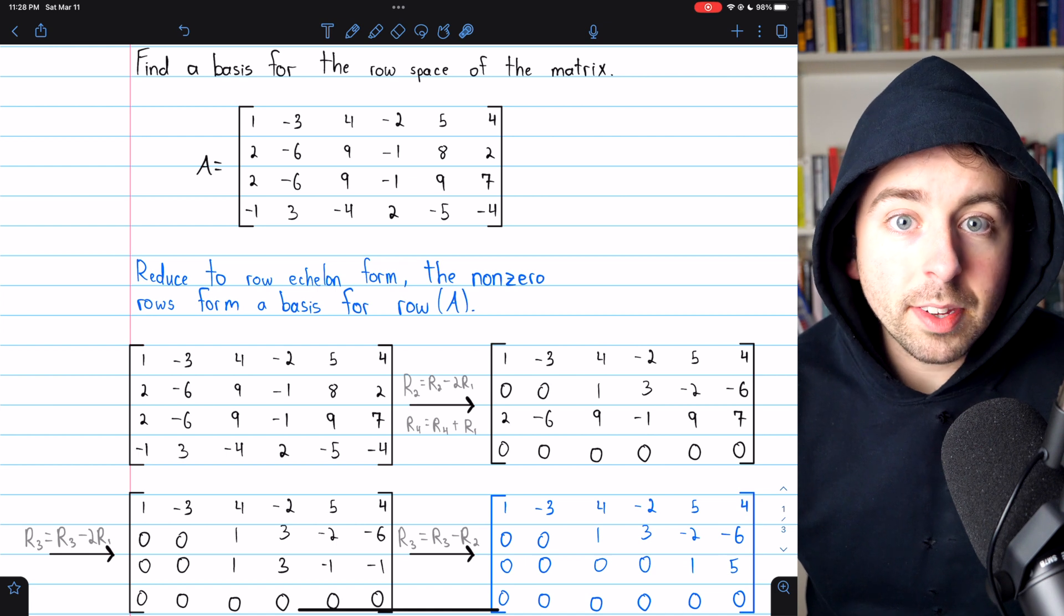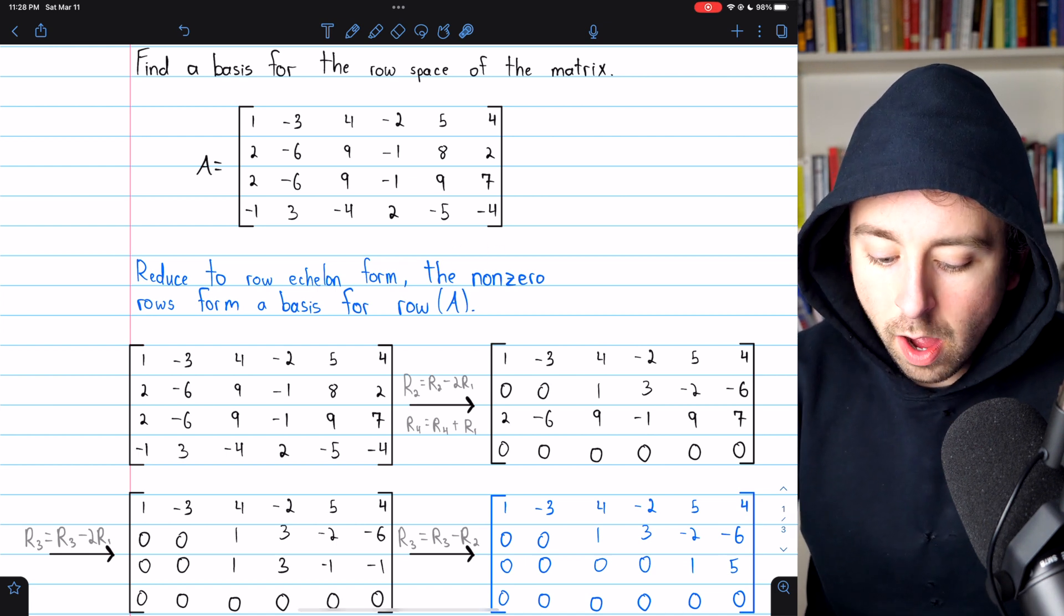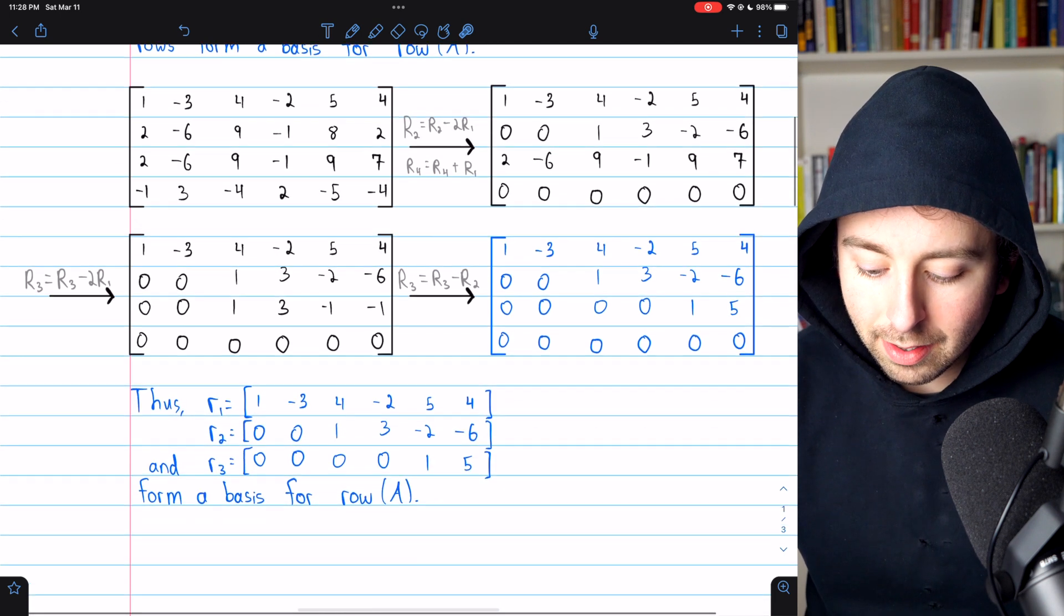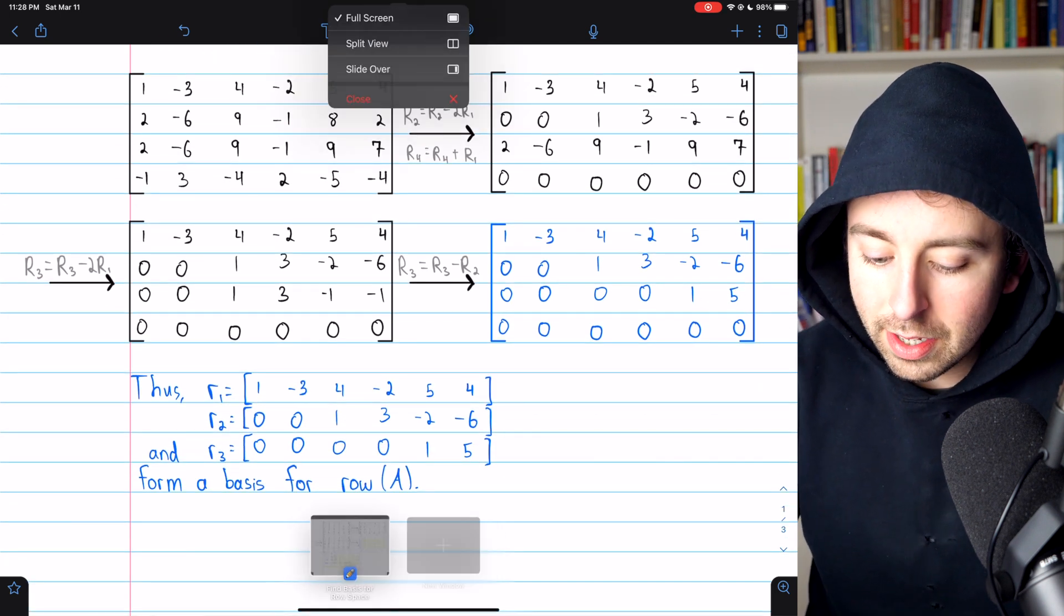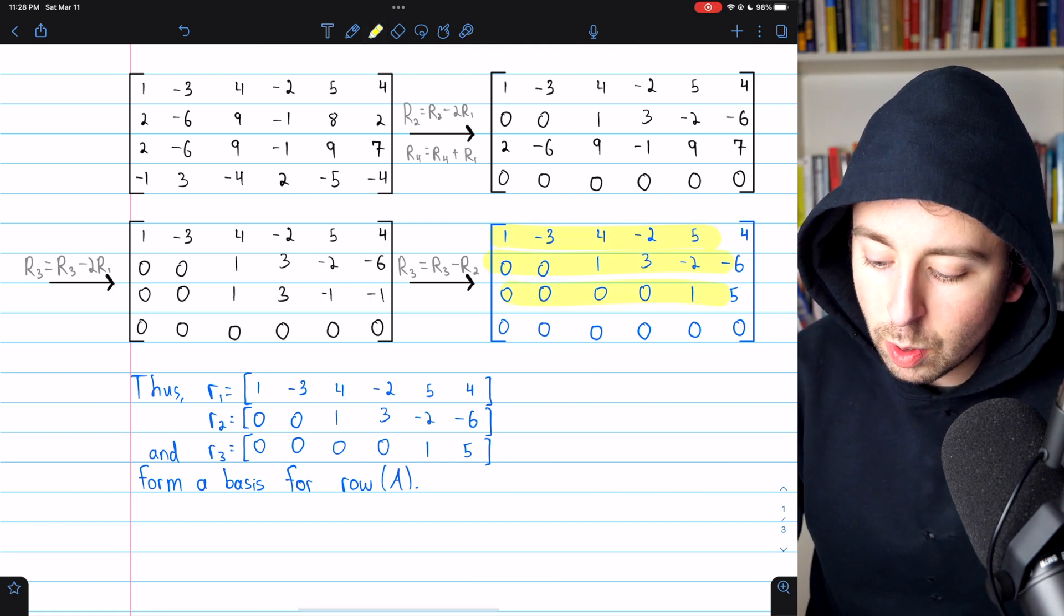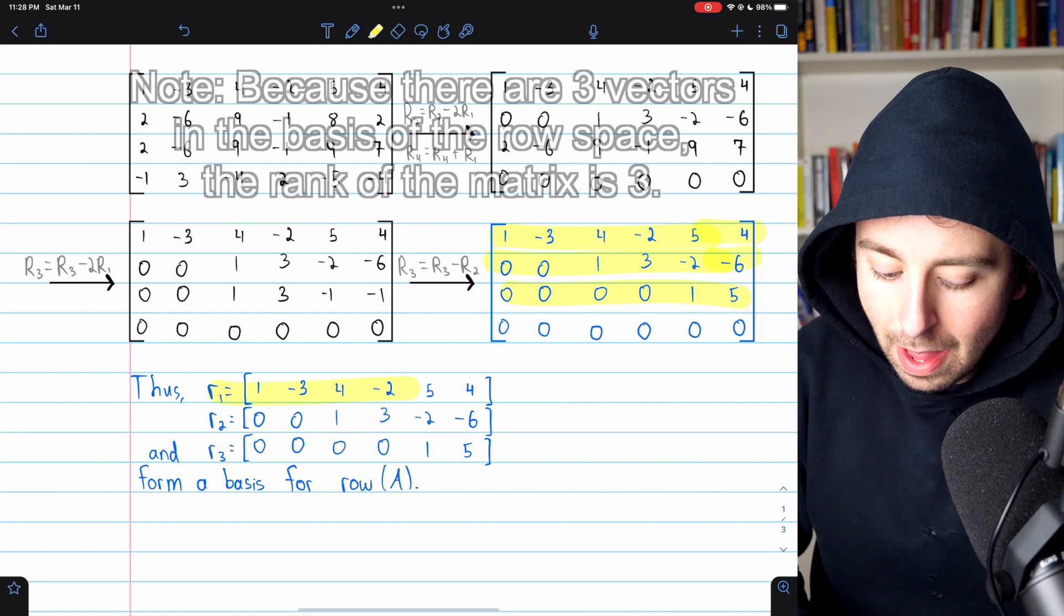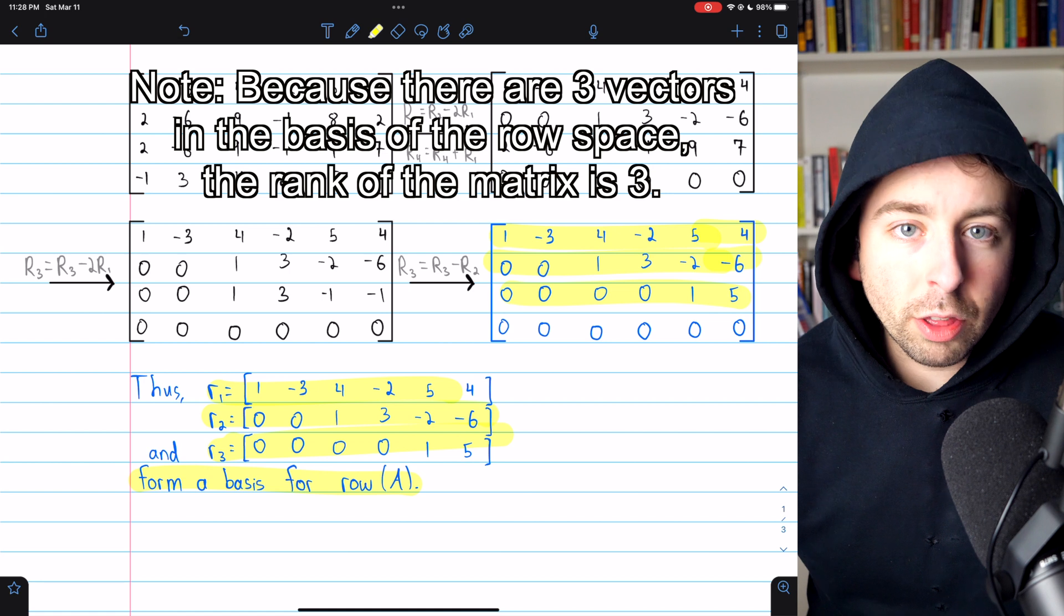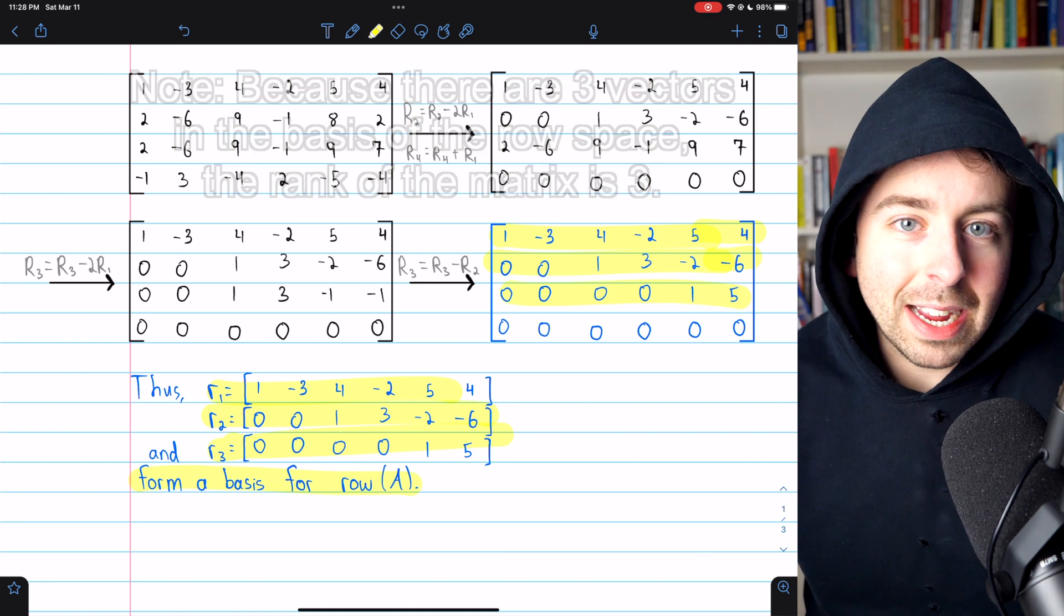Remember, once we get our matrix in row echelon form, the non-zero rows form a basis for our row space, so we're pretty much done. We see we've got these three non-zero rows, and those three row vectors form a basis for our row space, so these are three linearly independent vectors that together span the row space.